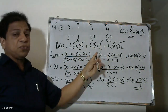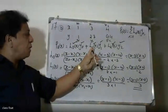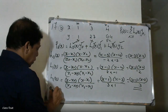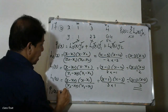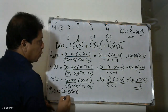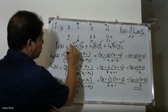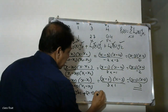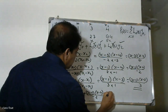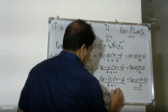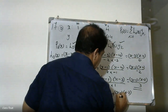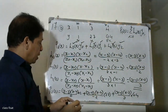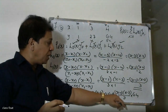Now we assemble f(x) = L0(x)·y0 + L1(x)·y1 + L2(x)·y2. Substituting: L0(x) = (x−3)(x−4)/6 times 1, plus L1(x) = (x−1)(x−4)/(minus 2) times 27, plus L2(x) = (x−1)(x−3)/3 times 64. We substitute the L0, L1, L2 values with y0 = 1, y1 = 27, y2 = 64.